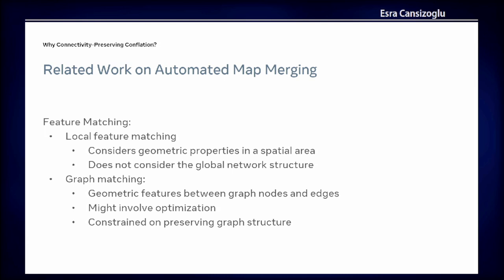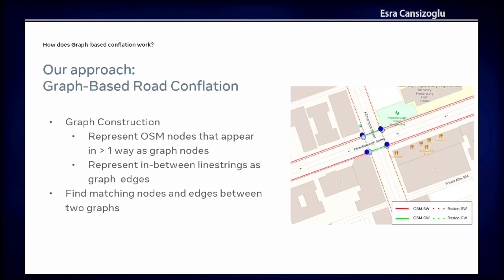Given the motivation for preserving connectivity in the overall network, we went with graph matching based algorithms. We also came across some deep learning based methods, but creating a training set and ground truth is a hard task here, so we proceeded with graph matching. The first major step is constructing the graph from OSM nodes and ways. The rule we applied: if a node appears in multiple ways, it becomes a graph node. Anything between those selected nodes is considered a graph edge, which are basically line strings.